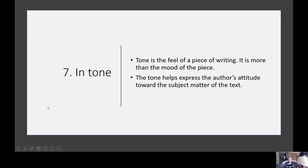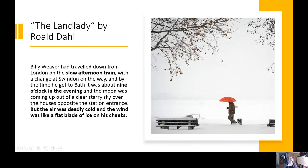Speaking of tone, tone is the seventh way that an author might foreshadow events that happen toward the end of the story. The tone is the feel of a piece of writing — it is more than mood. Tone helps express the author's attitude toward the subject matter of the text. You might hear a tone that is mocking or filled with anger, and this is done with word choice, imagery, similes, and metaphors.